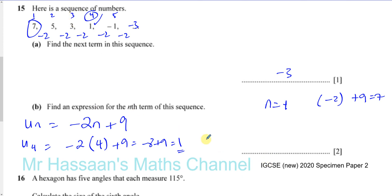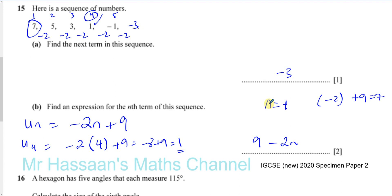So we have got the right sequence, and instead of writing minus 2n plus 9 I could write it as 9 minus 2n. The first term is 9 minus 2 which is 7, the second term 9 minus 4 which is 5, the third term 9 minus 6 which is 3. That's how we get the nth term of these kinds of sequences where they go down — or up — by the same amount each time. If it was increasing by 2 each time, I would start off by writing 2n and then adjust where it starts. These are called linear or arithmetic sequences.